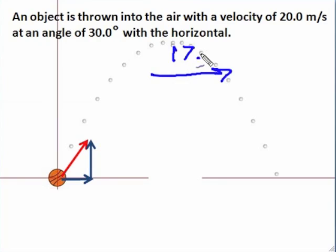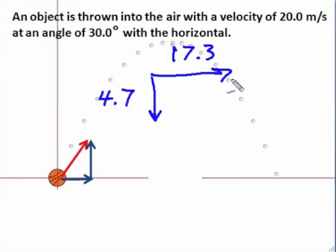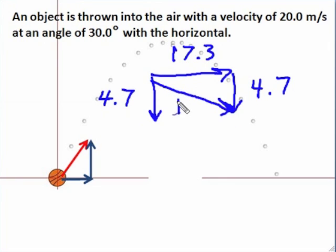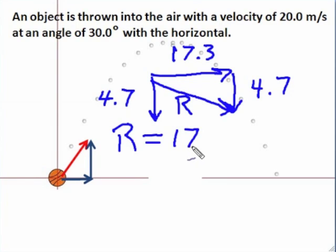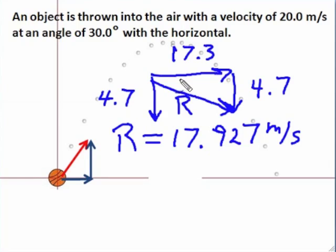So let's look at this again. The horizontal component is 17.3. VY, the vertical component at 1.5 seconds, is 4.7 — and the arrow down tells me the direction. So if I add them head to tail, I can very easily find this resultant, which is the magnitude of the velocity I want. And to find it, we use Pythagoras' theorem. I'll end up getting 17.927 meters per second.